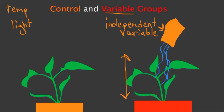I'll switch colors here. All right, so the dependent variable. Dependent variable is how much the plant is growing. Growth.